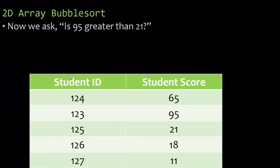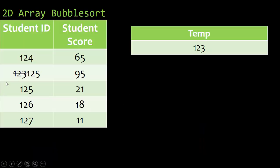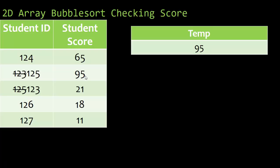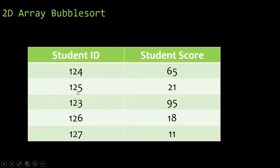So now we start checking the next score. We ask ourselves: is 95 greater than 21? It is. So it's time to swap both the ID and the student score. I move 123 to my temporary variable, I take 125 and overwrite it where 123 was. Then I take 123 out of my temp and move it into row plus one, because we're going to be running a loop here. Now that I have stored the IDs and swapped them, it is time to swap the 95 and the 21. I take 95, put it inside my temp variable, then take 21 and overwrite row two column two with 21. But I've stored 95, so now I can put that in row three column two. So now we have 125 and 21 tied together, and 123 and 95.